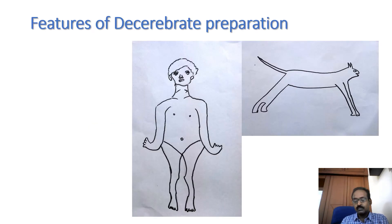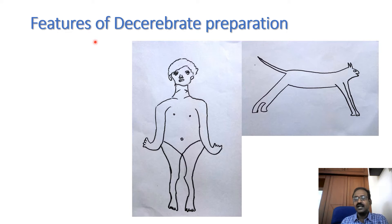The experimental animal decerebrate preparation is made between the superior colliculus and inferior colliculus. That is called the mid-collicular level of the lesion. It produces the decerebrate preparation.